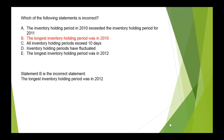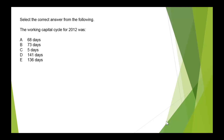Going back to the statements: 'the longest period was in 2010' — that is incorrect, because in fact the longest period was in 2012. The other statements are all correct: the inventory holding period in 2010 exceeded that for 2011, all periods exceeded 10 days, they have fluctuated with no steady rise or fall, and the longest period was in 2012. This is a straightforward and typical exam question.